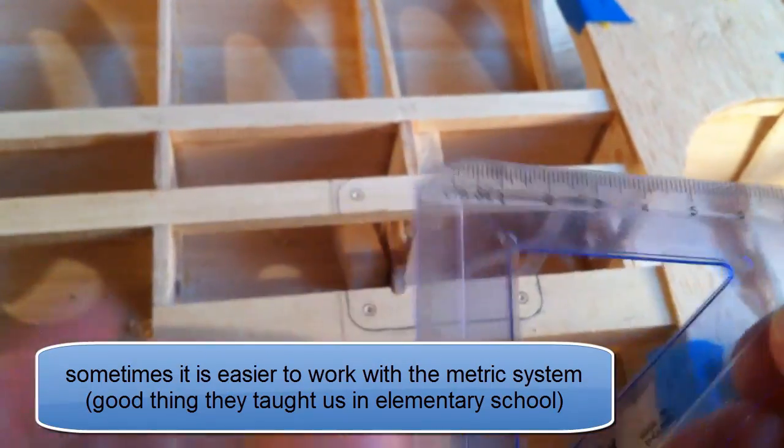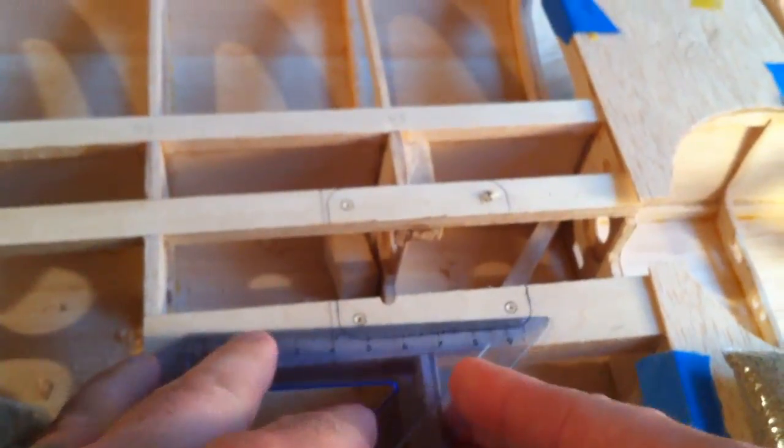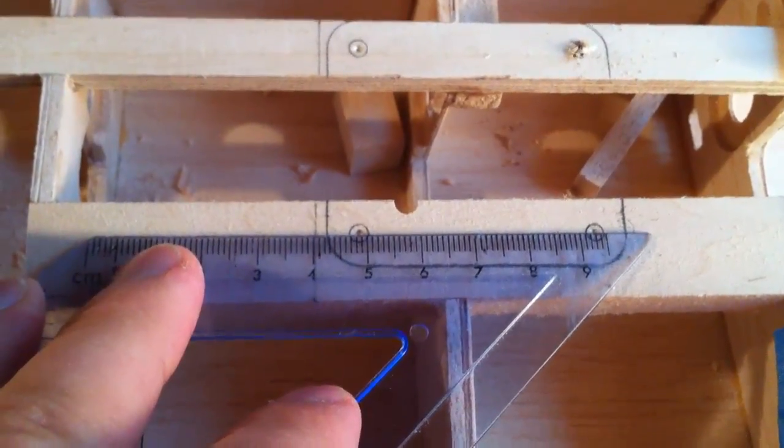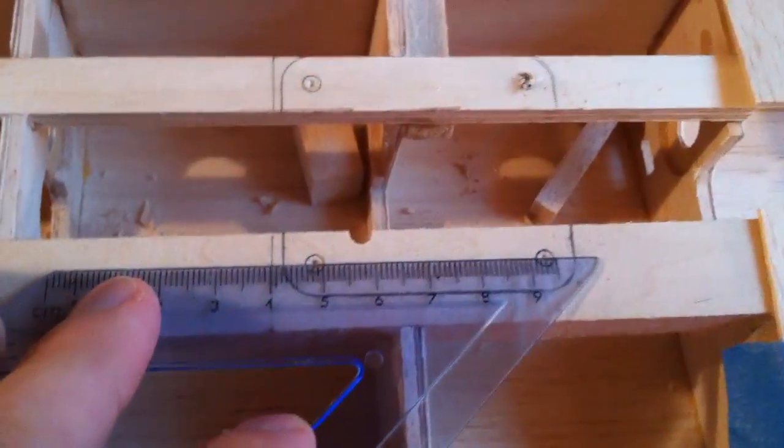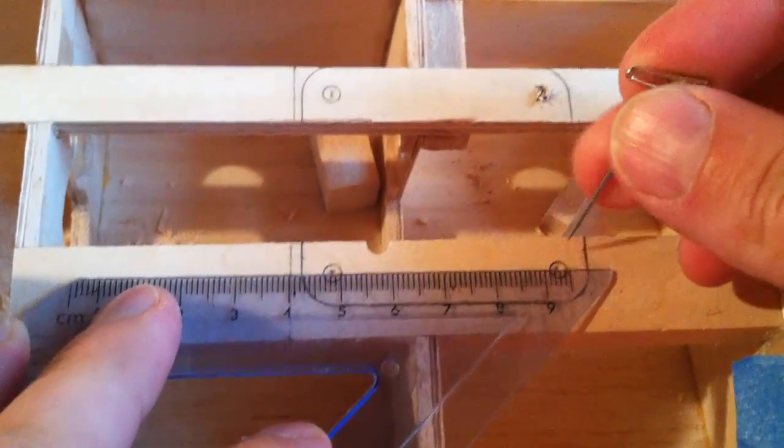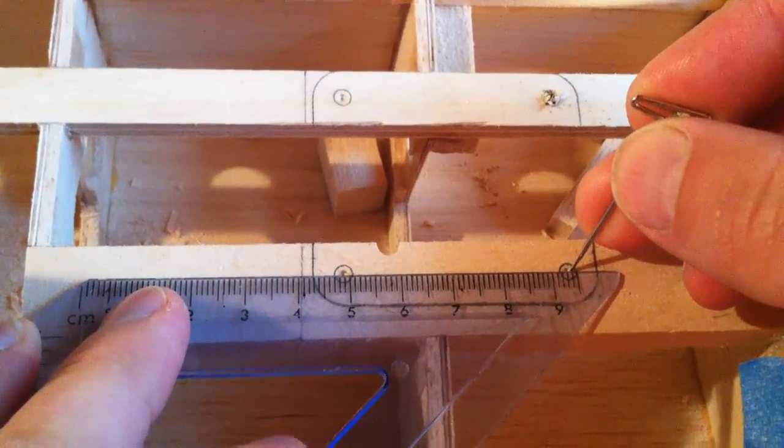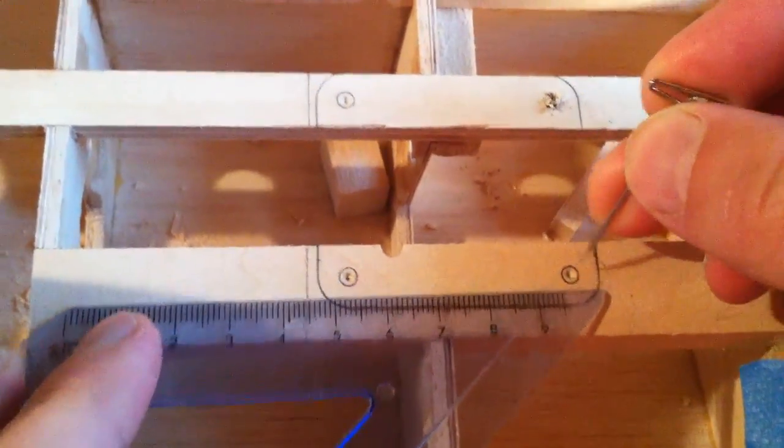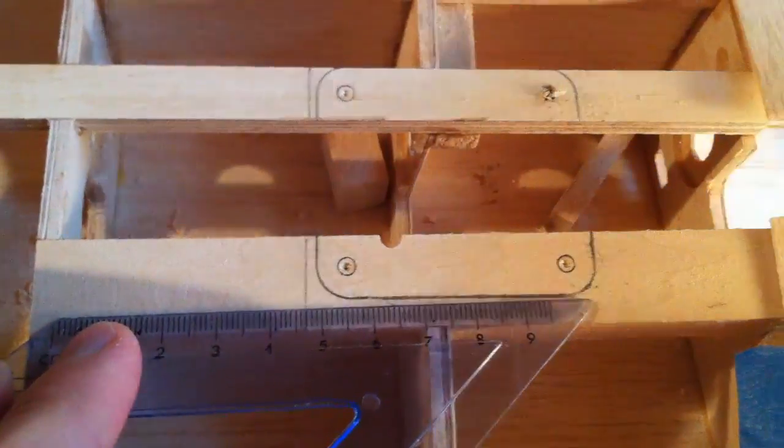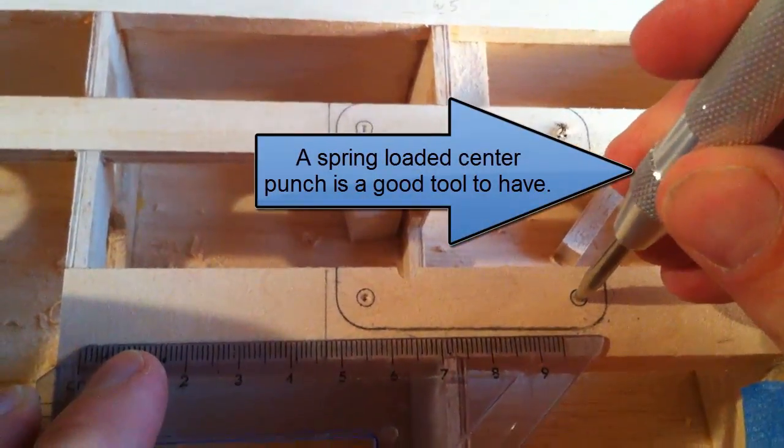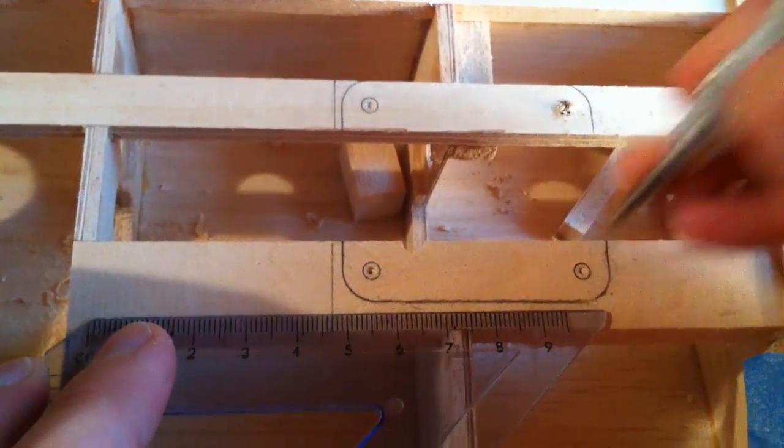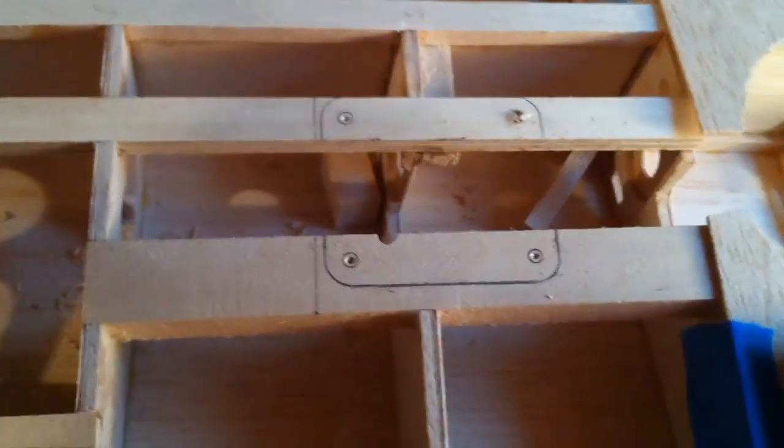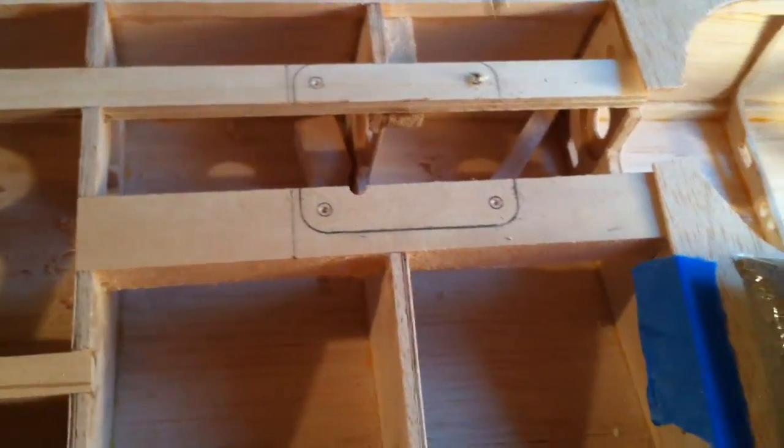I took my ruler, measured each hole, lined it up and marked off my center line. I just used a pin to mark off because a pencil would be too big. Once I found each center point, I used my punch to indent each hole on the center point to drill each hole.